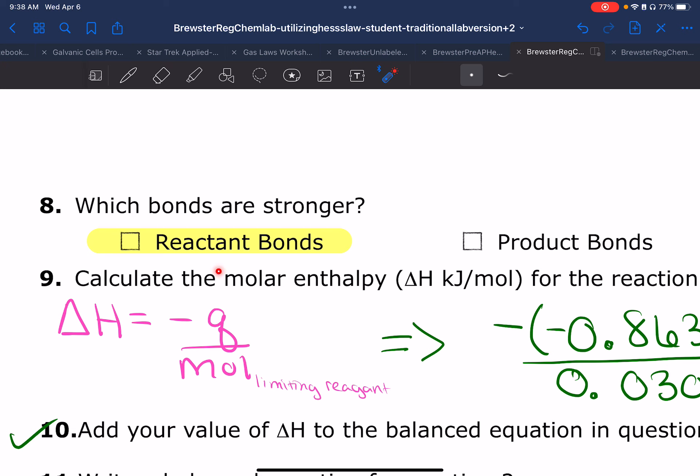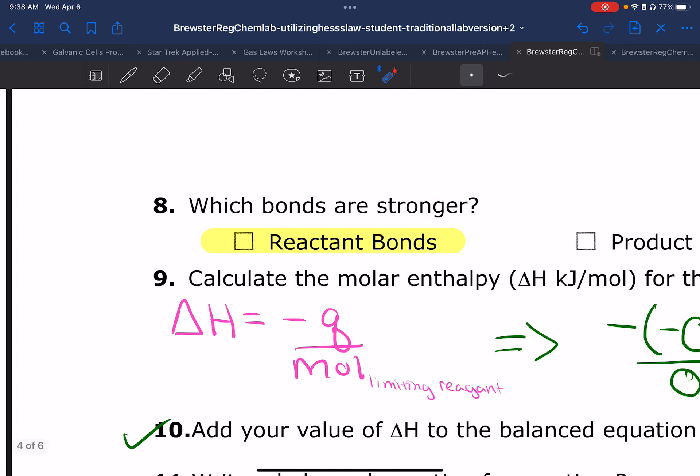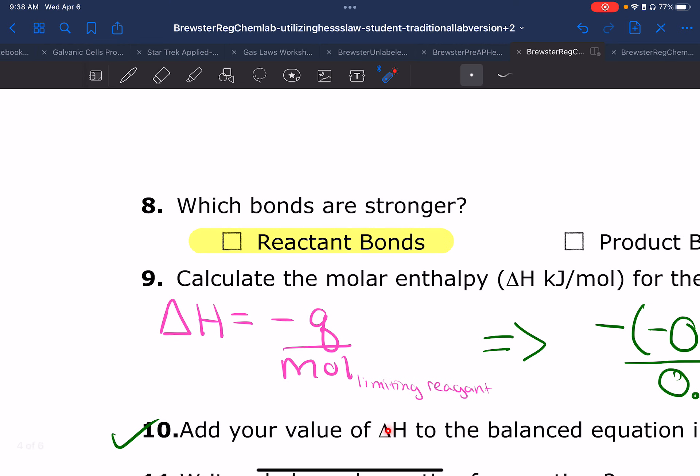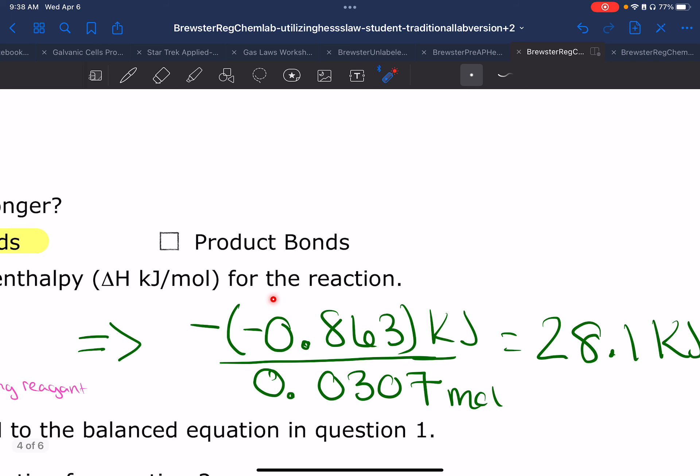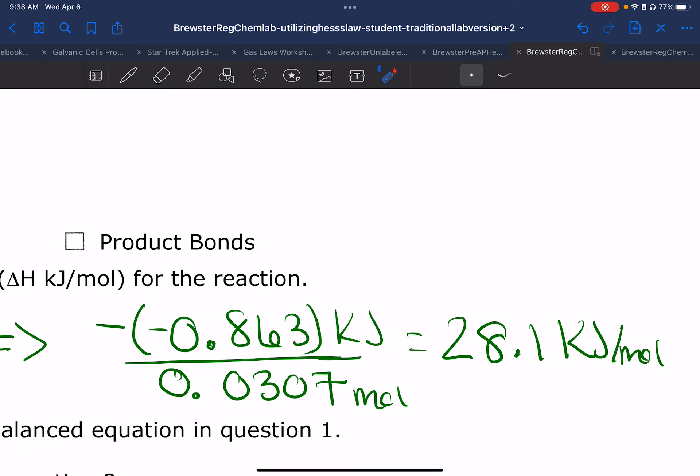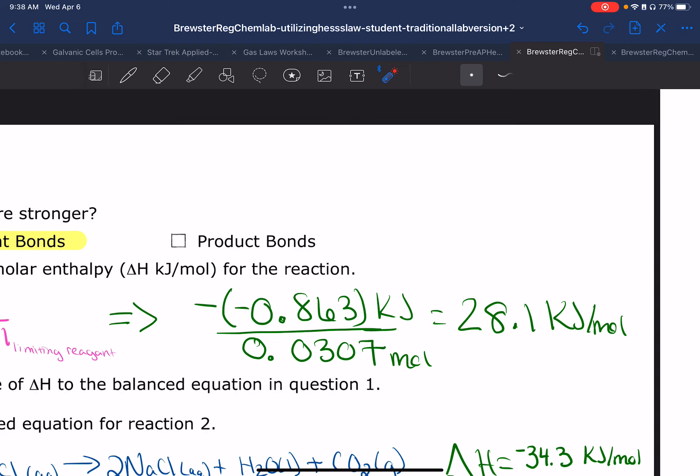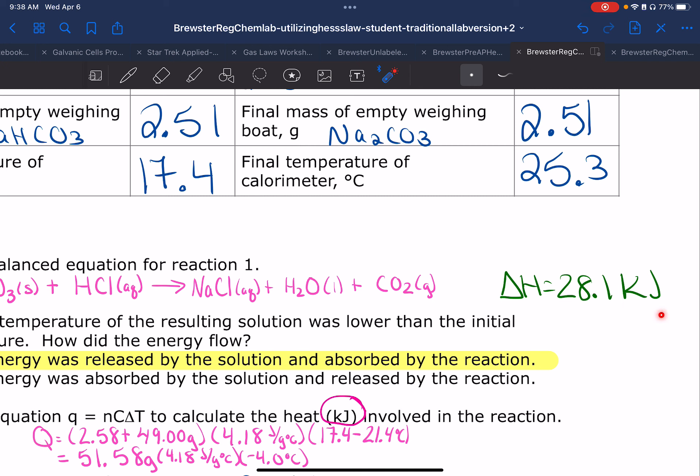Question number nine: calculate the molar enthalpy, delta H, which is kilojoules per mole for the reaction. This is why you need a limiting reagent, because this has to be based off of your limiting reagent. So I have delta H equals negative Q over moles. I'm going to take the number that I got in kilojoules, which is negative 0.863, put it in parentheses and drop the negative sign on the outside. I'm going to divide by 0.0307, and I get 28.1 kilojoules per mole. That's why on page one you saw this number, because the next question says to add that number to your balanced equation in question number one.